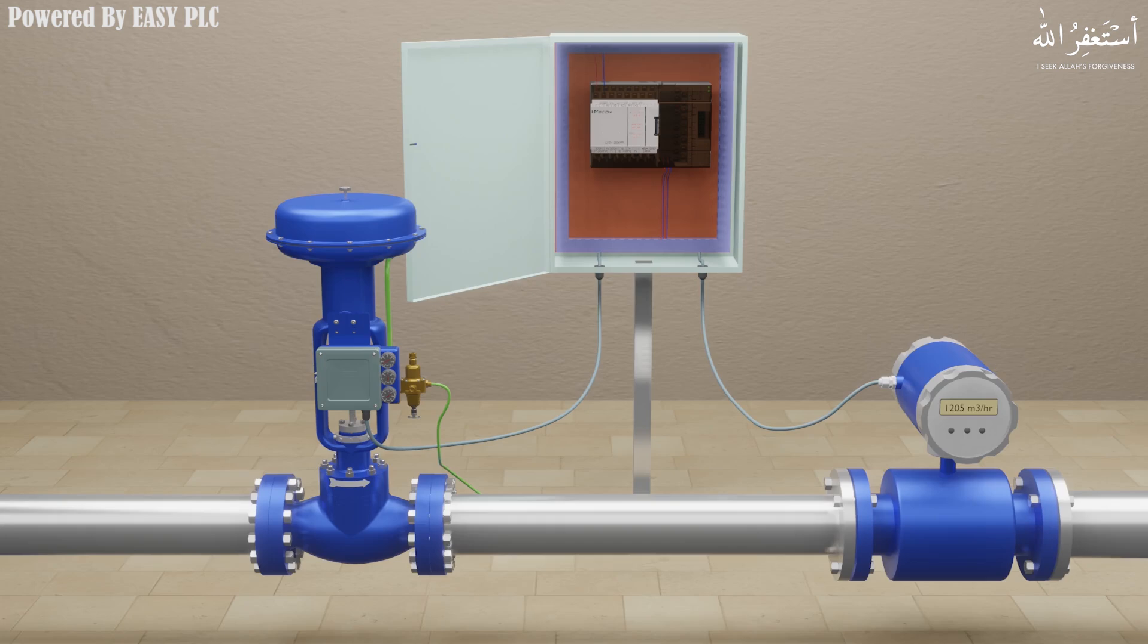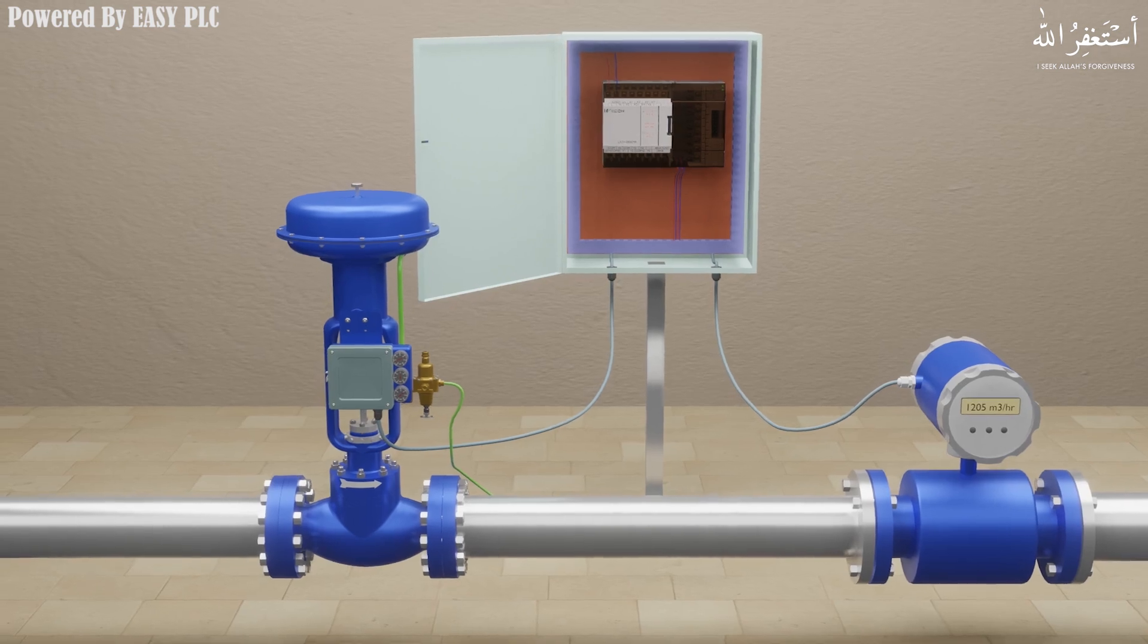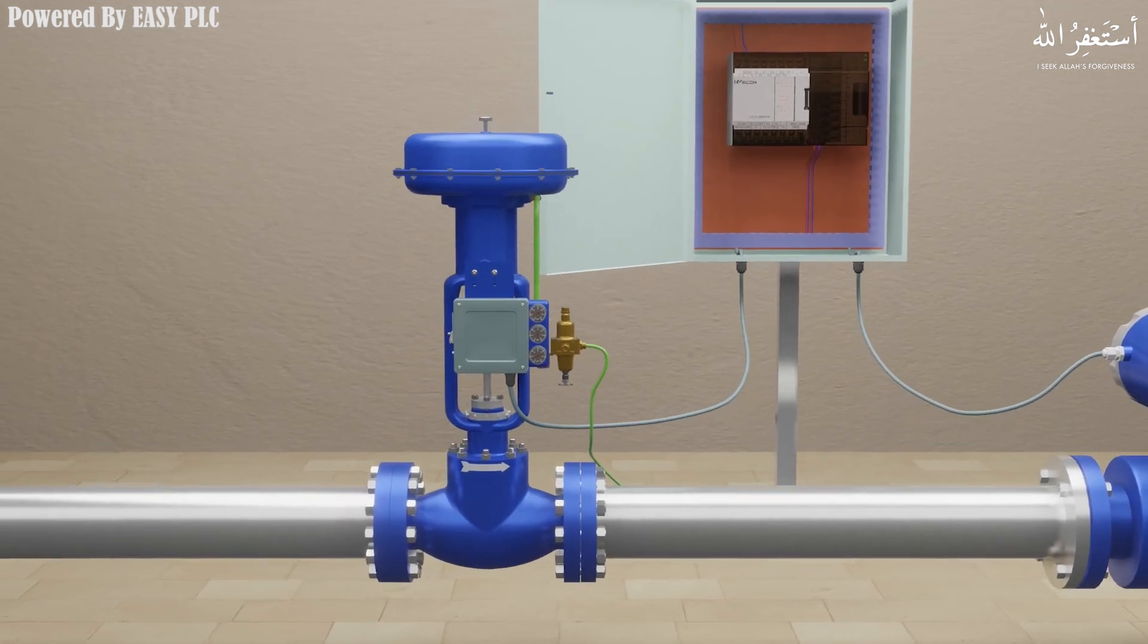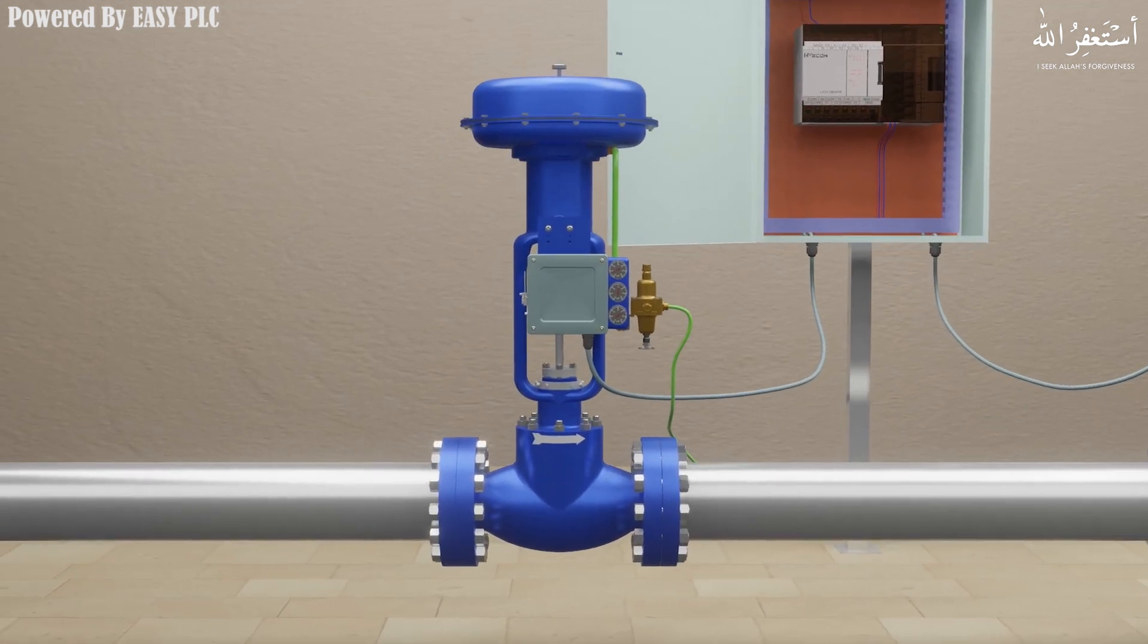A control valve is a power-operated device used to regulate or manipulate the flow of fluids such as gas, oil, water, and steam. It is a critical part of a control loop and it is an example of a final control element. The control valve is by far the most common final control element used in industry today.